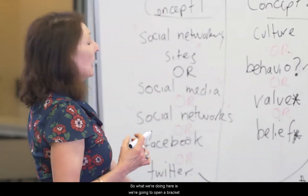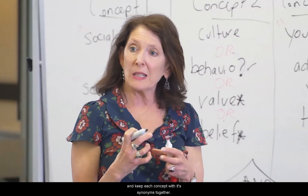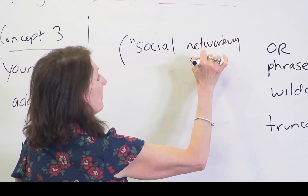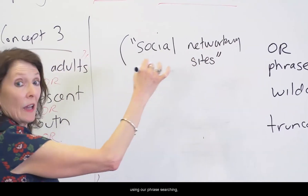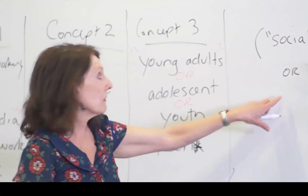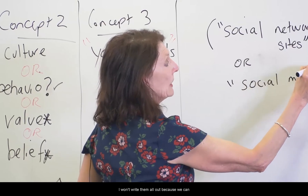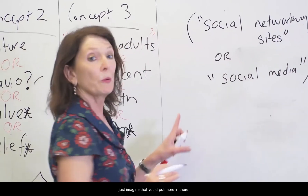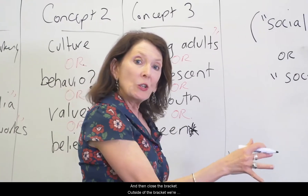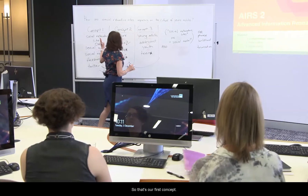What we're doing here is opening a bracket and keeping each concept with its synonyms together. So concept one will be 'social networking sites' — using phrase searching and the OR operator within the bracket — or 'social media.' You would put more synonyms in there, then close the bracket. Outside of the bracket we say AND — so that's our first concept.